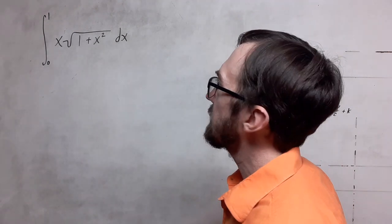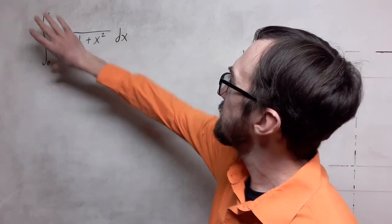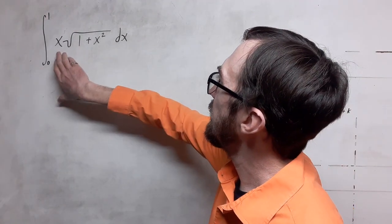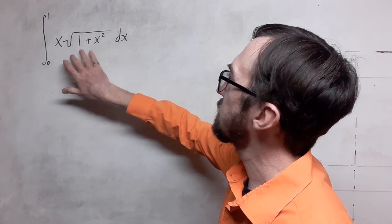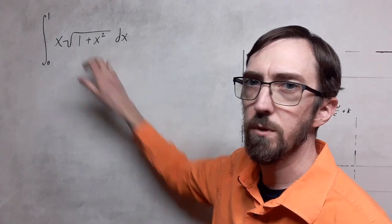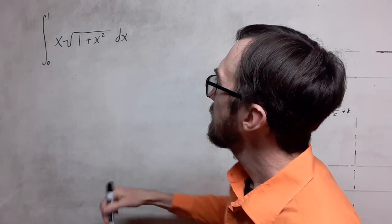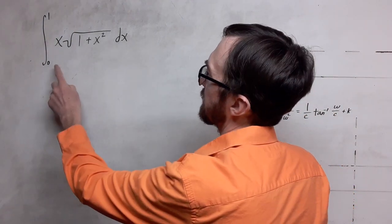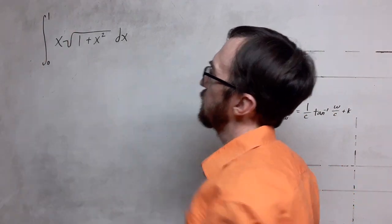Greetings. Let's take a look at this definite integral x times the square root of 1 plus x squared. We're going to integrate from 0 to 1.